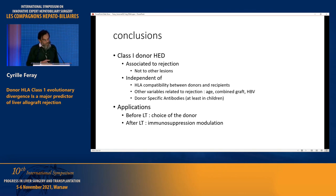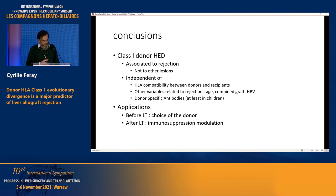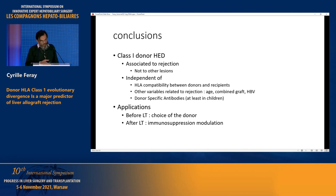We can apply this new biomarker before transplantation for the choice of donor. In some occasions, we can refuse a proposed recipient and wait for a better match. After liver transplantation, it can be very useful to guide immunosuppression and to wean immunosuppression in patients receiving a low HED donor.